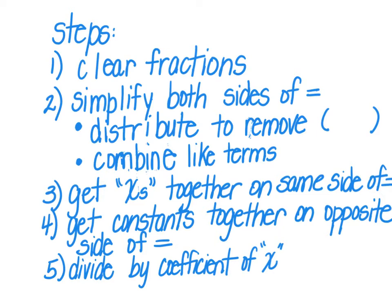Steps three and four are kind of interchangeable. I just think it's important to do it the same way every time. I always get my x's together first; some people choose to get their constants together first. It doesn't matter, but it's wise to always do the same thing. The very last step is to divide by the coefficient of x — division will be your last step.